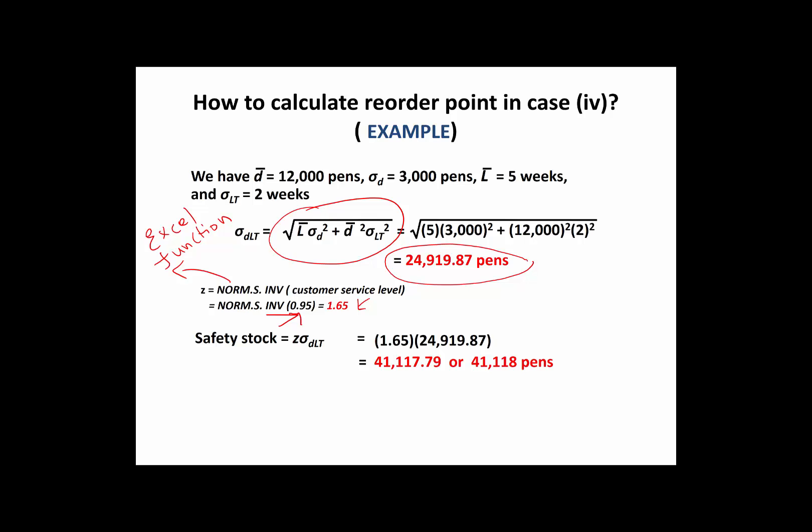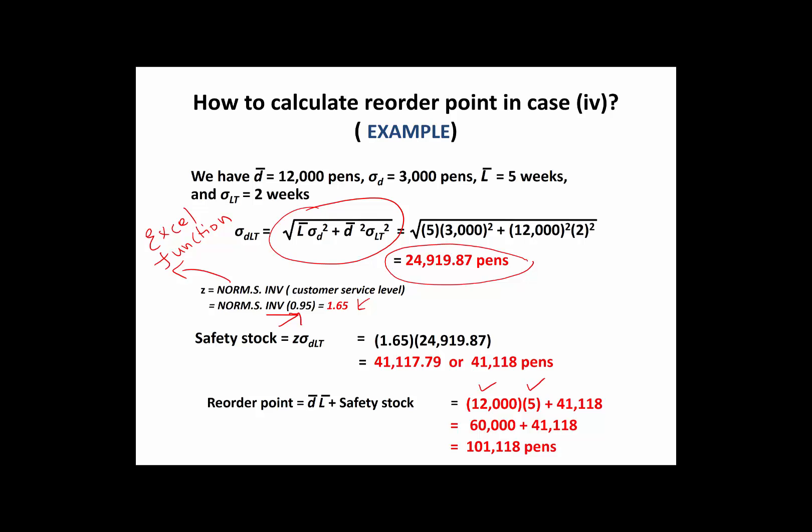Now, add the safety stock to the nominal value to get the reorder point. The nominal value is the product of average demand and average lead time, which equals 60,000. Adding the safety stock gives a reorder point of approximately 101,000 pence. So when the on-hand inventory drops to 101,000, the buyer will place an order equal to the economic order quantity — that is the idea of the reorder point.